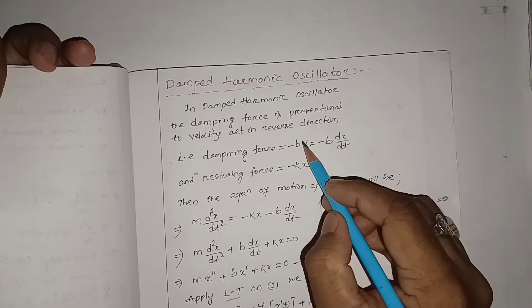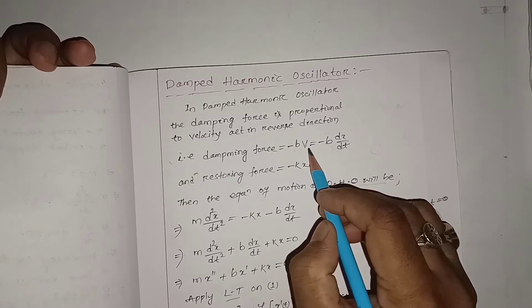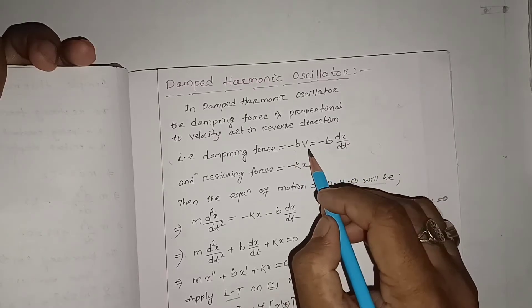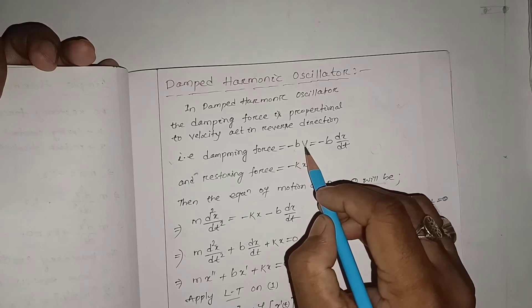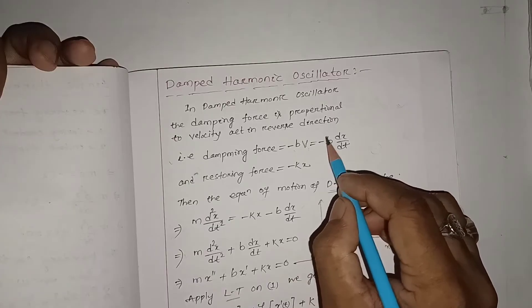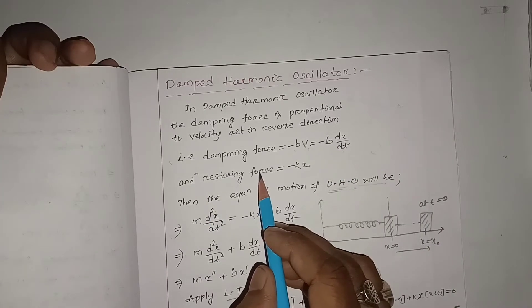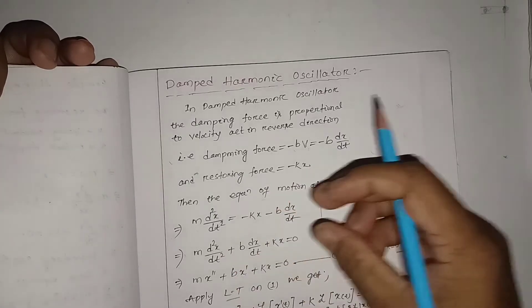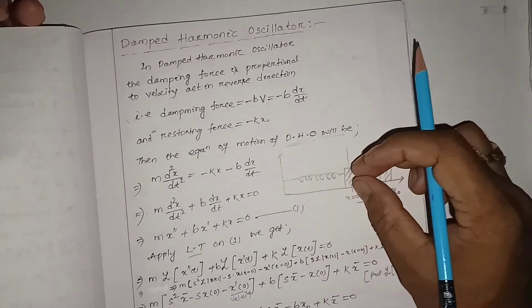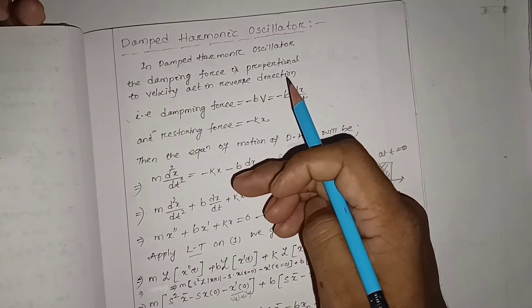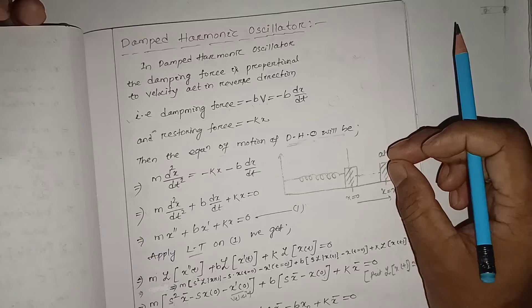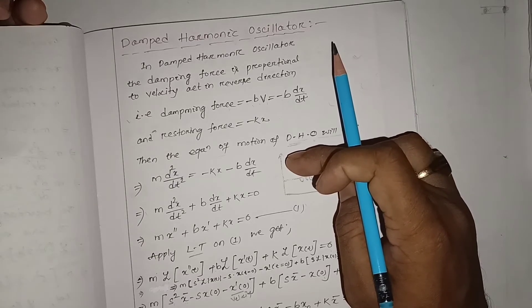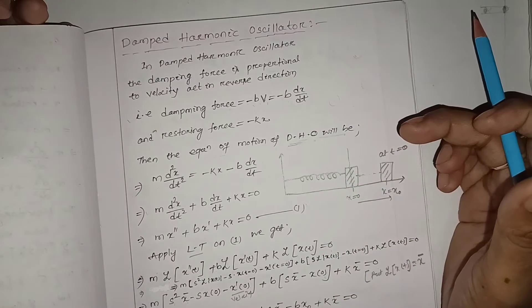Finally the body comes to rest. The damping force is proportional to velocity but opposing it, so it is written as minus b·(dx/dt). The restoring force always acts in the reverse direction of the displacement — if displacement is along one direction, restoring force acts backward — so restoring force equals minus kx. The restoring force is always proportional to displacement but acts in the reverse direction.